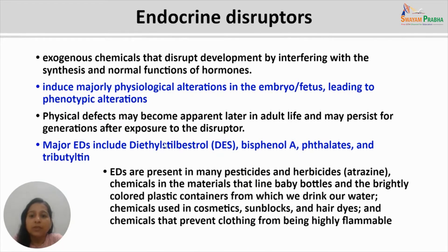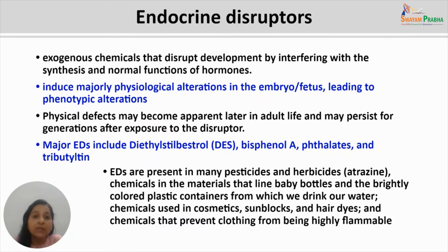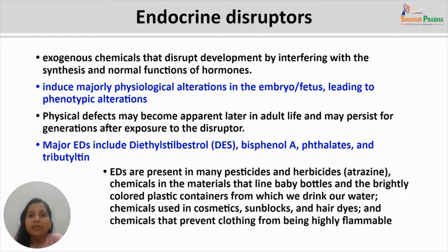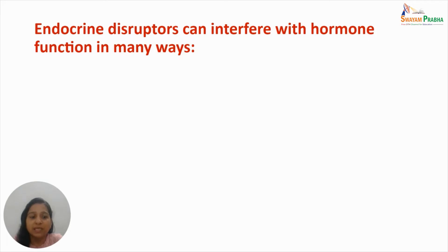These endocrine disruptors are present in many pesticides and herbicides, such as the commonly used herbicide atrazine. They are also found in chemicals lining baby bottles and brightly colored plastic containers, chemicals used in cosmetics, sunblock creams, hair dyes, and chemicals used in flame-retardant clothing. If a pregnant woman is exposed to these chemicals, they affect the child's development in severe ways.